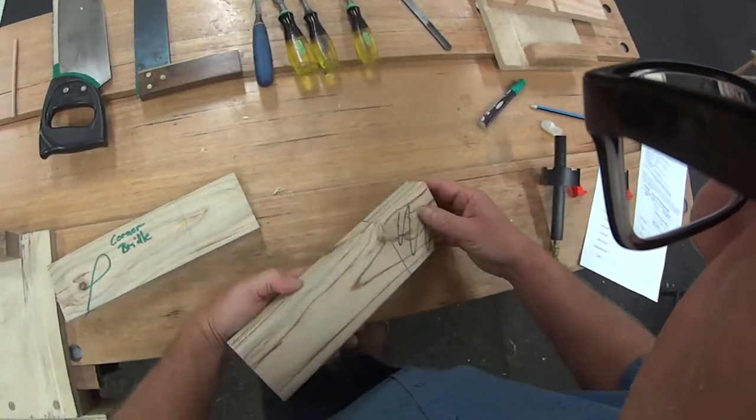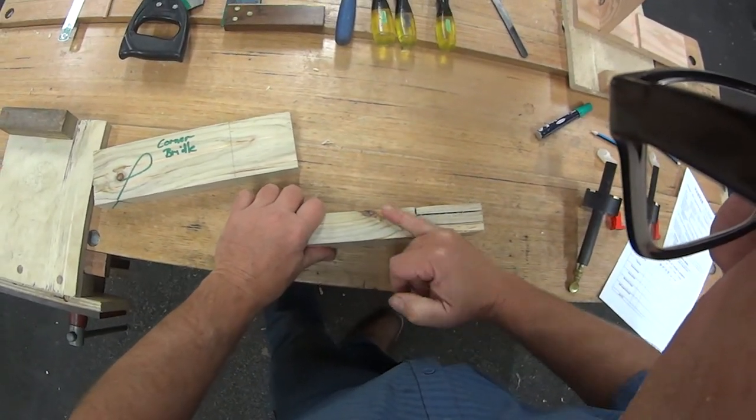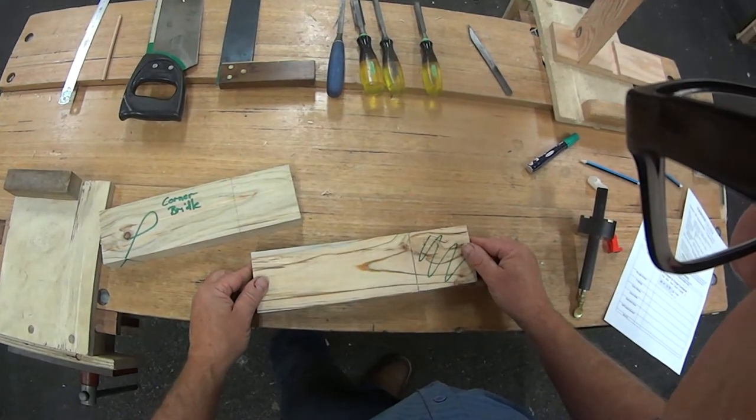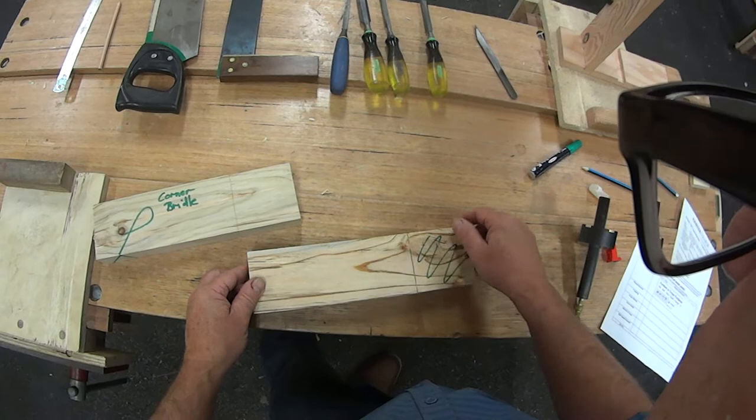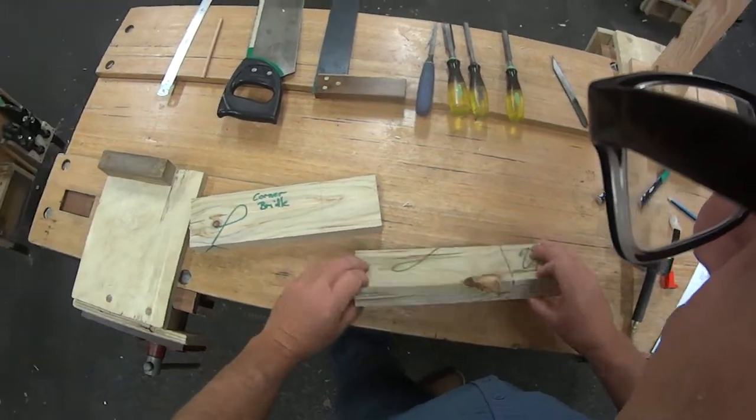This bit of timber has got a bit of a problem. It's got a knot in it there which runs across right where I'm going to be sawing. I'd rather avoid it if I can, but sometimes you've got to work with timber that's got flaws in it, and this will give you guys a demonstration on how to work through a hard piece of wood.